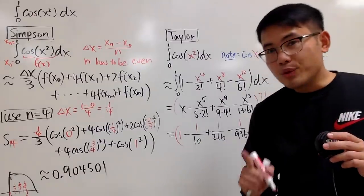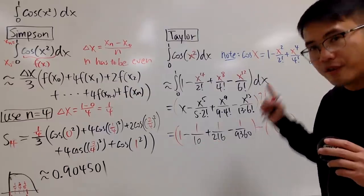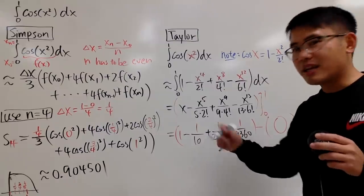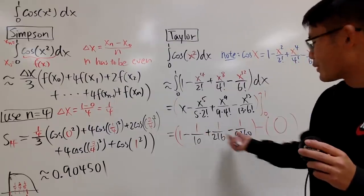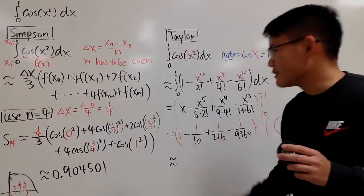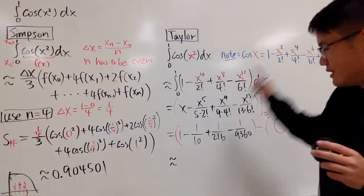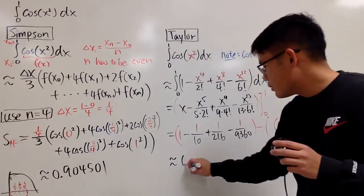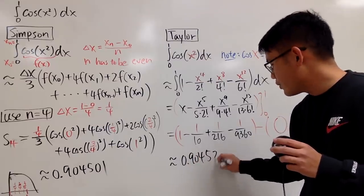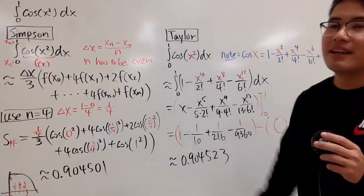Notice, you don't need any fancy calculator because this is just fraction. You can add this up and get approximation. If you don't like approximation, you can get your common denominator and that would be pretty cool. But I will give you an approximation so we can compare. If you use Taylor series, we get 0.904523. This is the answer from Taylor.